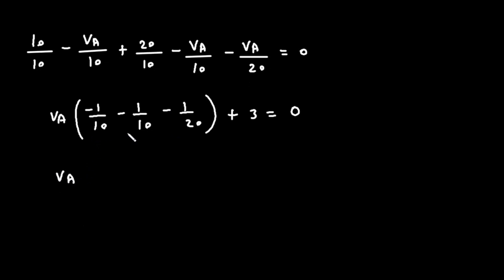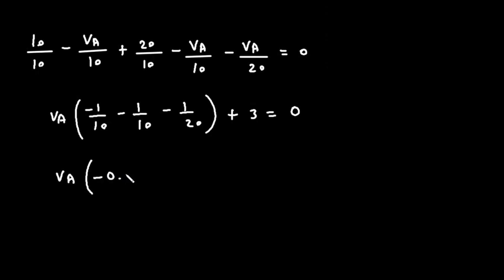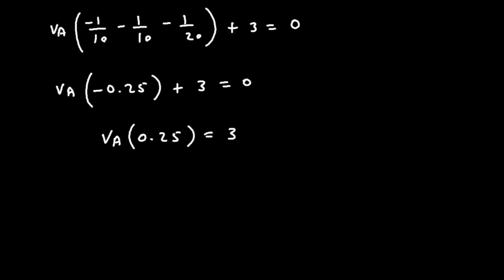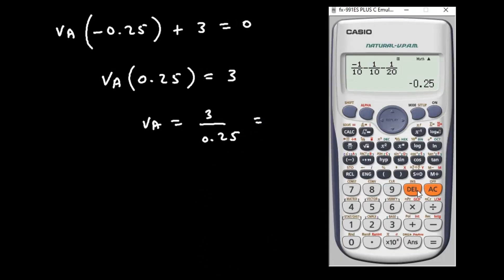Let's calculate this part. It will be minus 1 upon 10, minus 1 upon 10, minus 1 upon 20, which gives minus 0.25. So minus 0.25 VA plus 3 equals 0. Taking the constant to the other side gives positive 0.25 VA equals 3. Therefore VA is equal to 3 upon 0.25, which is 12.